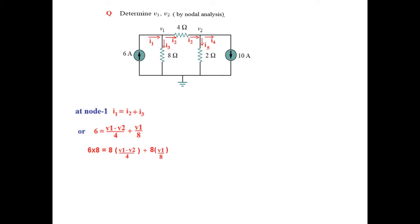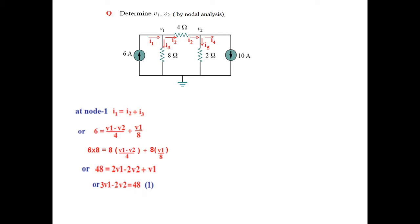The LCM in this case is 8, so we multiply both sides by 8. We get 48 on the left side. Simplifying, we get 2V1 minus 2V2 plus V1, and grouping like terms gives us 3V1 minus 2V2 equals 48. This is our Equation 1 for node number 1.